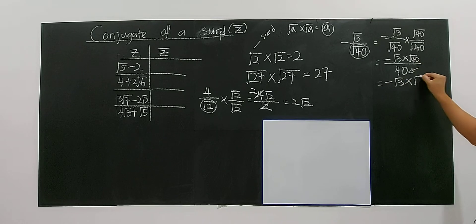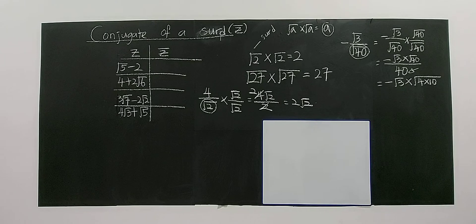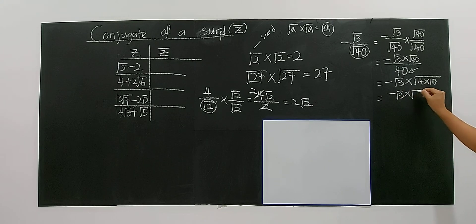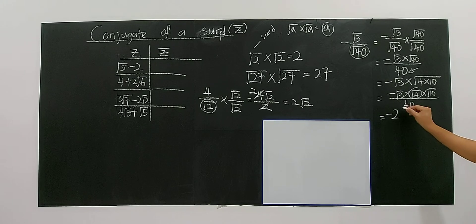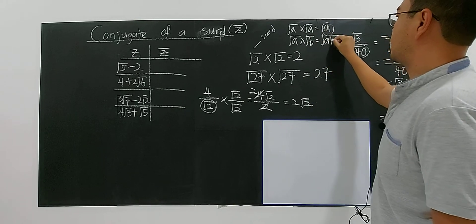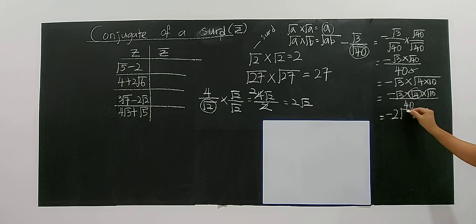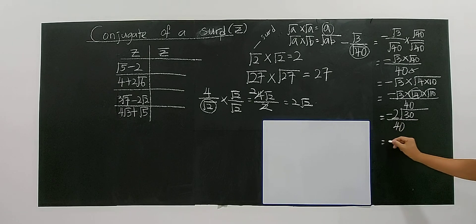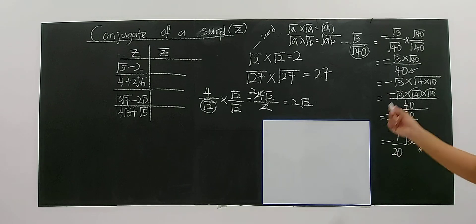Now let's say you have negative square root of three divided by square root of forty. Multiply by square root of forty over square root of forty to rationalize the denominator. On the bottom you get forty. On top, break square root of forty into square root of four times square root of ten, giving 2 times square root of ten. Combined with the numerator, you get negative 2 times square root of thirty divided by forty, which simplifies to negative one over twenty times square root of thirty.